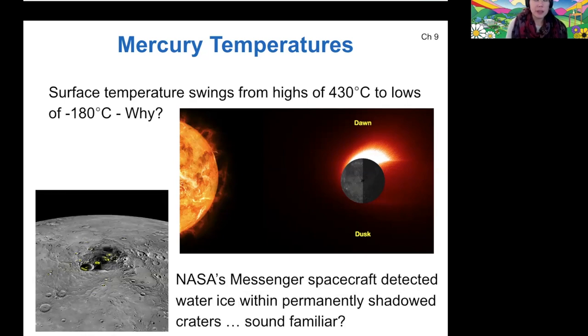The Messenger spacecraft from NASA has imaged the surface of Mercury and detected water ice within permanently shadowed craters. This is exactly the same sort of situation as we see on the moon, which has a very small amount of water locked away in ice in its permanently shadowed craters as well. There is some survivability for water here on the surface, but not much.